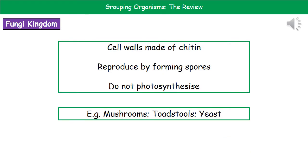The third kingdom is the fungi kingdom. Their features include cell walls made of a chemical called chitin. They reproduce by forming spores and they do not photosynthesize. Three examples are mushrooms, toadstools, and yeast.